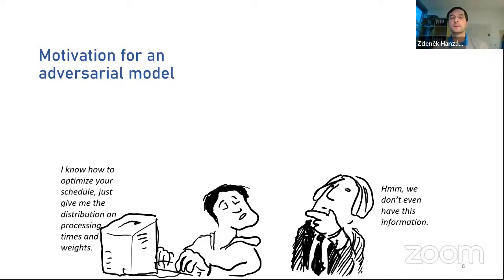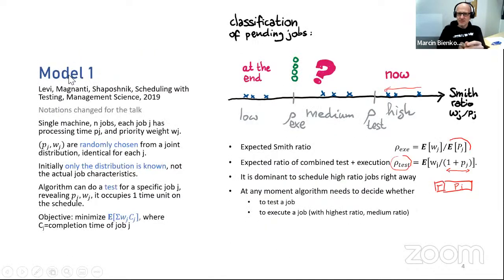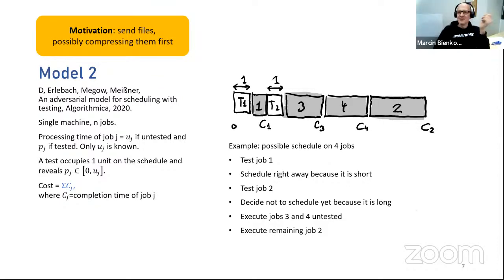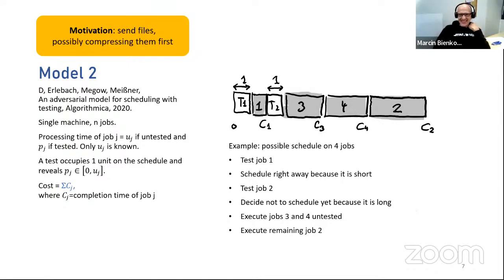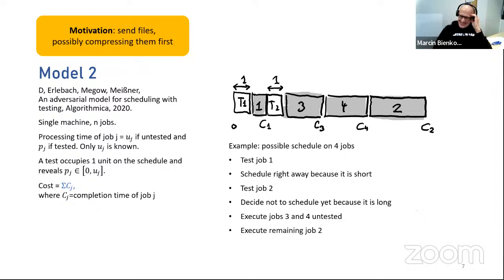A question from Marcin: for model two, have you considered the weighted variant? That would be follow-up work — not done yet. I was hoping you might present an easy reduction showing the weighted case is equivalent. If a student discovers that reduction, that would be fair.